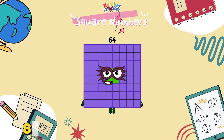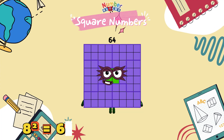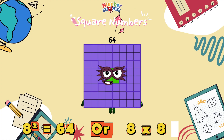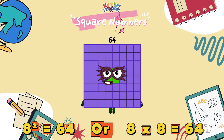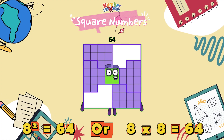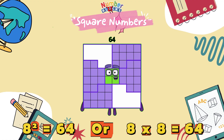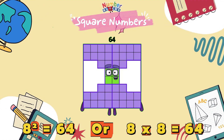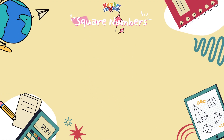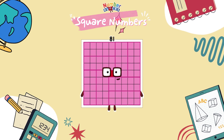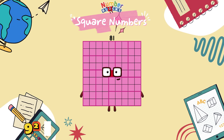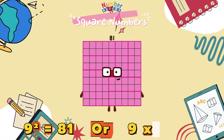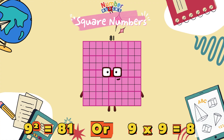8 squared is equals to 64, or 8 times 8 is equals to 64. 9 squared is equals to 81, or 9 times 9 is equals to 81.